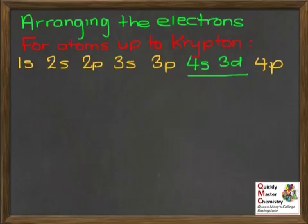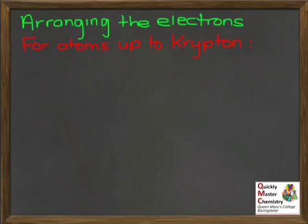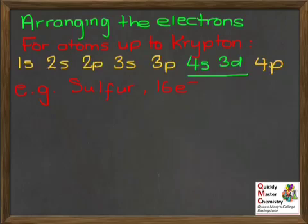We'll put this into practice now. We'll pick an element, sulfur. Sulfur's got 16 electrons, so we need to arrange these 16 electrons in the relevant shells and subshells. I'll work through this one quite slowly, so that you can see what's going on and the convention for how this is written.